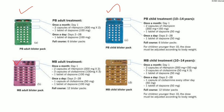For Multibacillary adult dosage, the MDT drugs include Rifampicin, Dapsone, and Clofazimine. On Day 1, Rifampicin and Clofazimine are given. From Day 2, we are going to take Dapsone 100 mg daily, and Clofazimine 50 mg in brown color tablets for the full course.